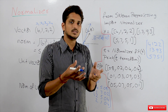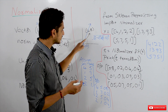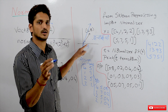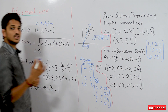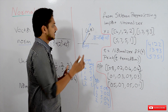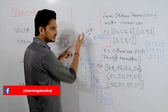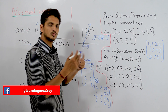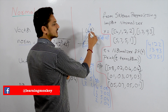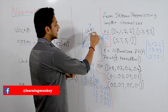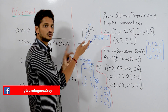The norm of a vector is nothing but the vector's distance from the origin — the length of the vector from the origin. So how do we calculate the norm of a vector? For vector (2, 8) from origin (0, 0), we use the distance formula: square root of (2 minus 0) squared plus (8 minus 0) squared. This is how we calculate the distance between two points, which gives us the length of the vector from the origin.